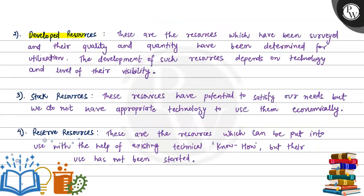Now we will see the second type: developed resources. These are the resources which have been surveyed and their quality and quantity have been determined for utilization. The development of these resources depends on technology and the level of their viability.